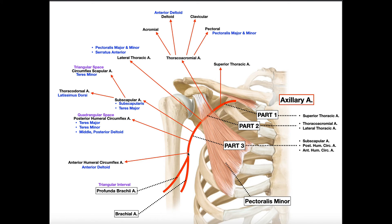The axillary artery doesn't continue indefinitely — it changes names. Right after it gives off the anterior humeral circumflex artery, it transitions into the brachial artery. Specifically, this name change occurs when the artery crosses past teres major. So when the axillary artery passes teres major, it becomes the brachial artery.